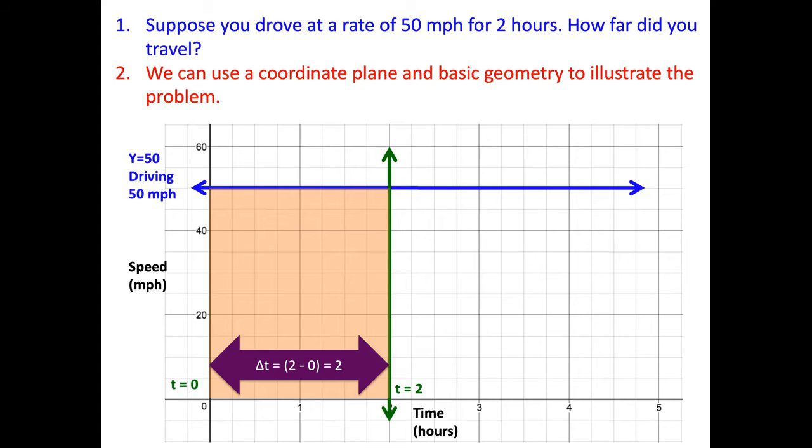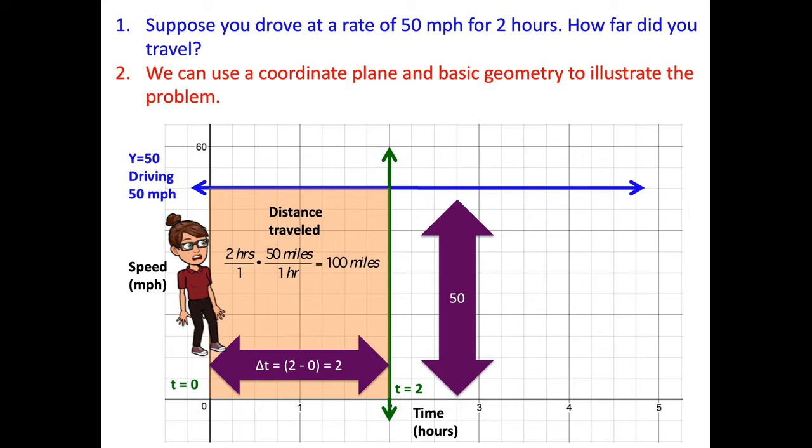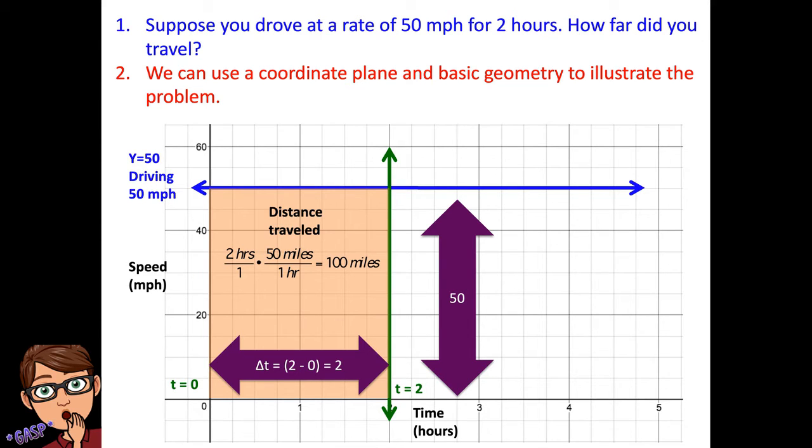Well, the base is the change in time. It started at zero and went to two. So delta T, remember delta means change or difference. So you subtract the difference and you figure out it's two. Now what's the height of your rectangle? Well, it's constant. It's just 50. Now if you multiply those two together, you get distance traveled. Notice the hours units actually simplify to one. So you have two hours over one times 50 miles per one hour gives you 100 miles, which is the answer we already knew. But we were able to show this in an illustrating way. And notice what we did here is we found the area under a rate function, which was in this case constant.